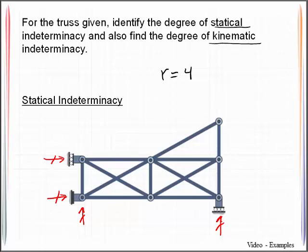In addition to that, we have an unknown bar force for every member in this truss. So we would have to count them up and we would come up with a total of 13 bar forces. This tells me that the total number of unknown forces that we have in this truss will be 17.